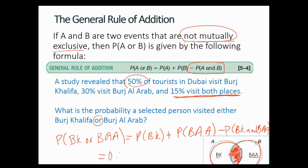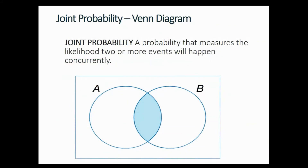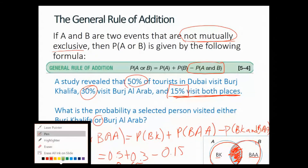Putting in the numbers: 0.5 + 0.3 − 0.15 (the joint) = 0.65. We have already mentioned this joint probability — the joint probability is a probability that measures the likelihood of two or more events happening at the same time, like in the exercise we just finished.